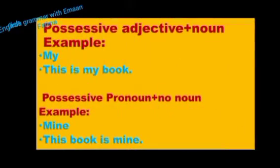The difference between possessive pronouns and possessive adjectives: a possessive pronoun shows that something belongs to someone, while a possessive adjective is usually used to describe a noun and it comes before a noun. For example, 'This is my book.' — 'my' is a possessive adjective because it comes before the noun 'book.'